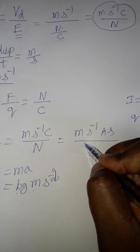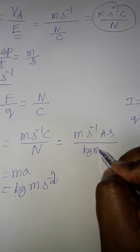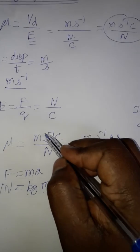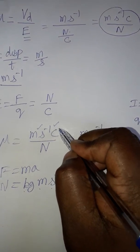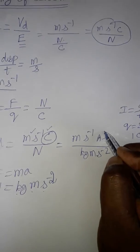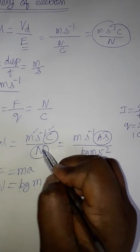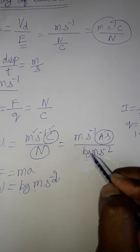One Newton we can write as kg meter second minus 2, meter second inverse. Instead of coulombs, I wrote ampere into second. Instead of Newton, I wrote kg meter second inverse.